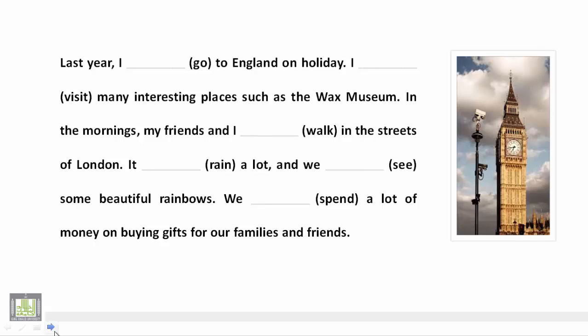Let's look at a short paragraph using past simple tense. 'Last year' — so we know we are talking about something in the past and must use past simple. 'Last year I went to England on holiday.' Notice that 'go' is one of the irregular verbs — غير القياسية. 'I visited' — 'visited' is a regular verb because we have -ED.